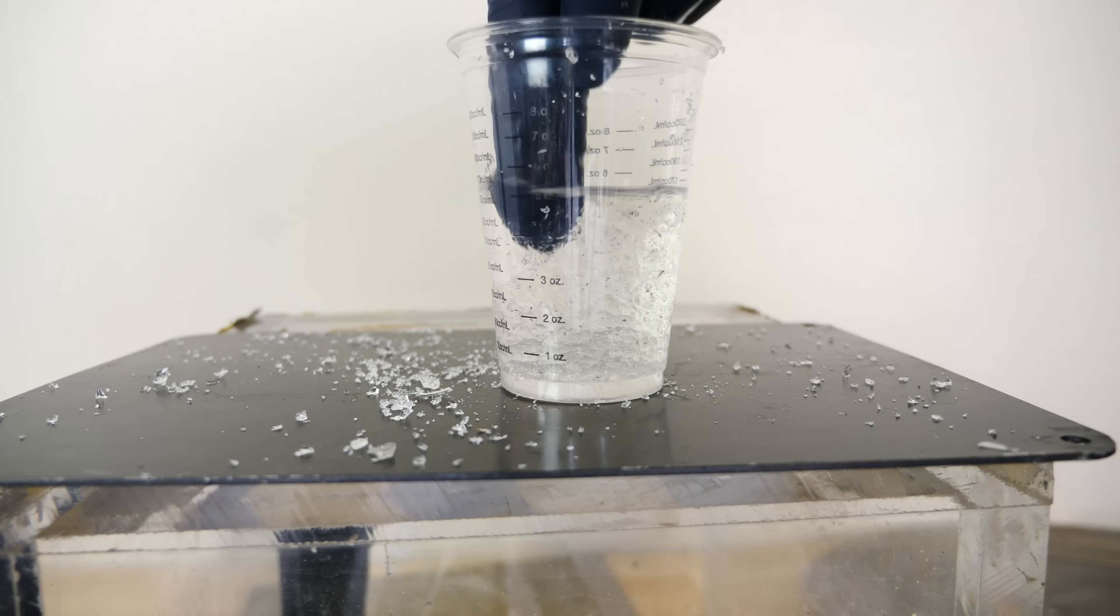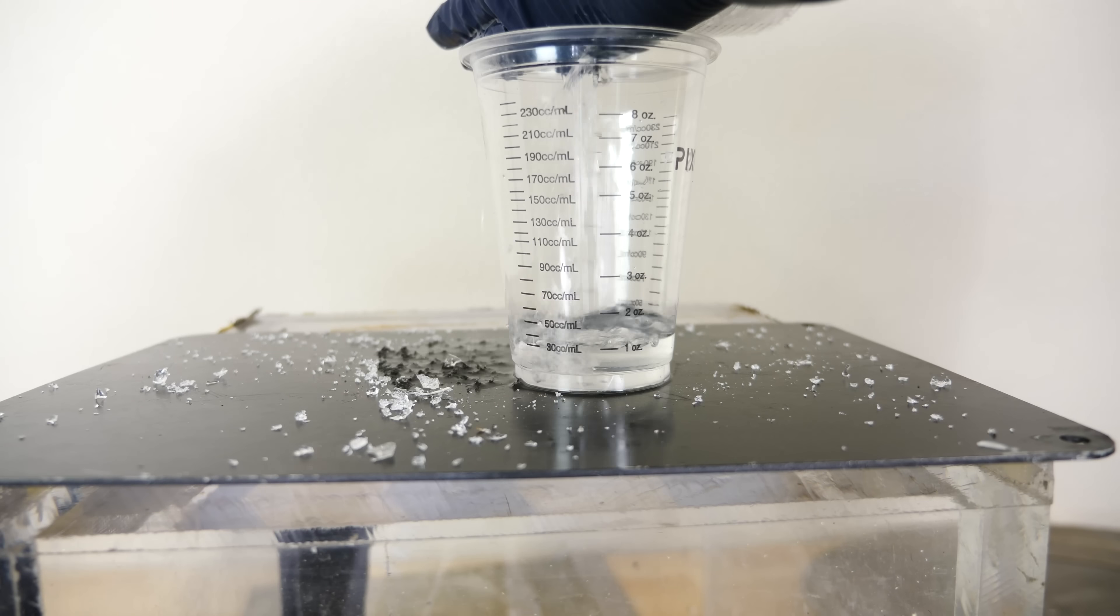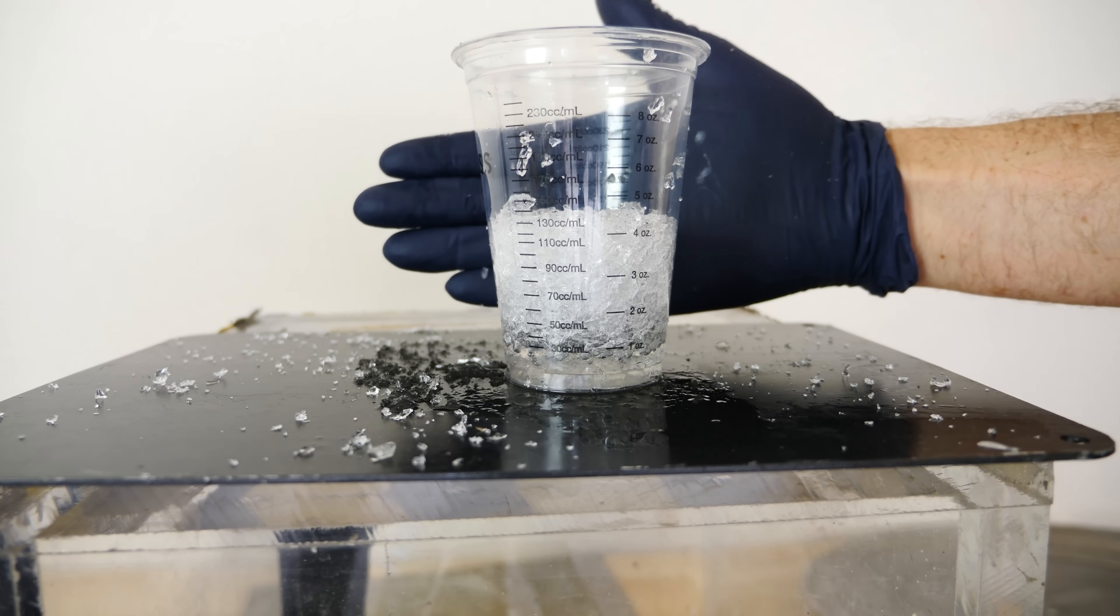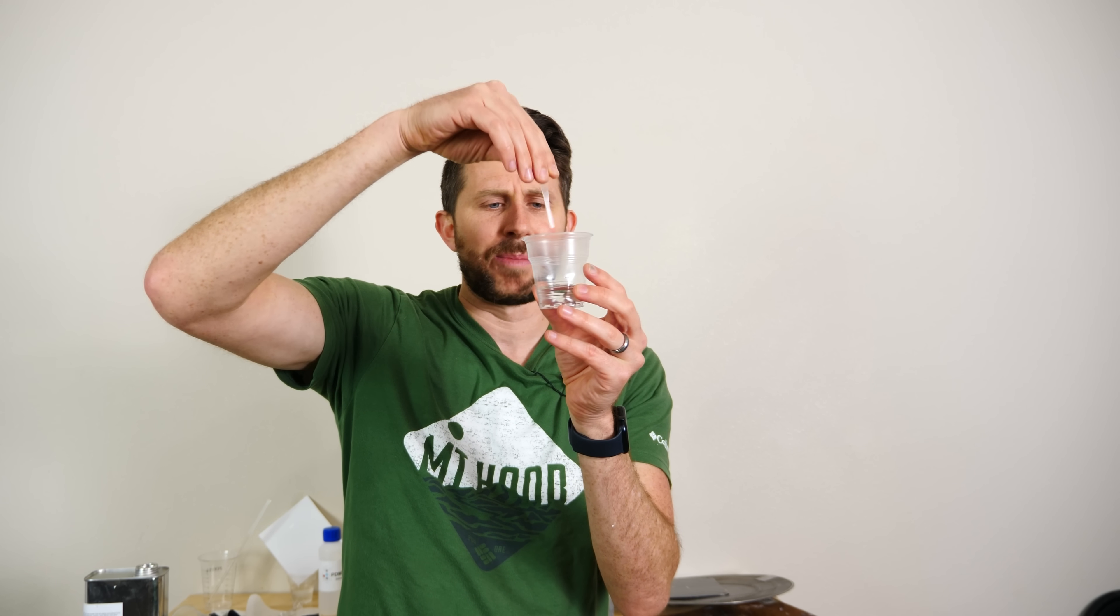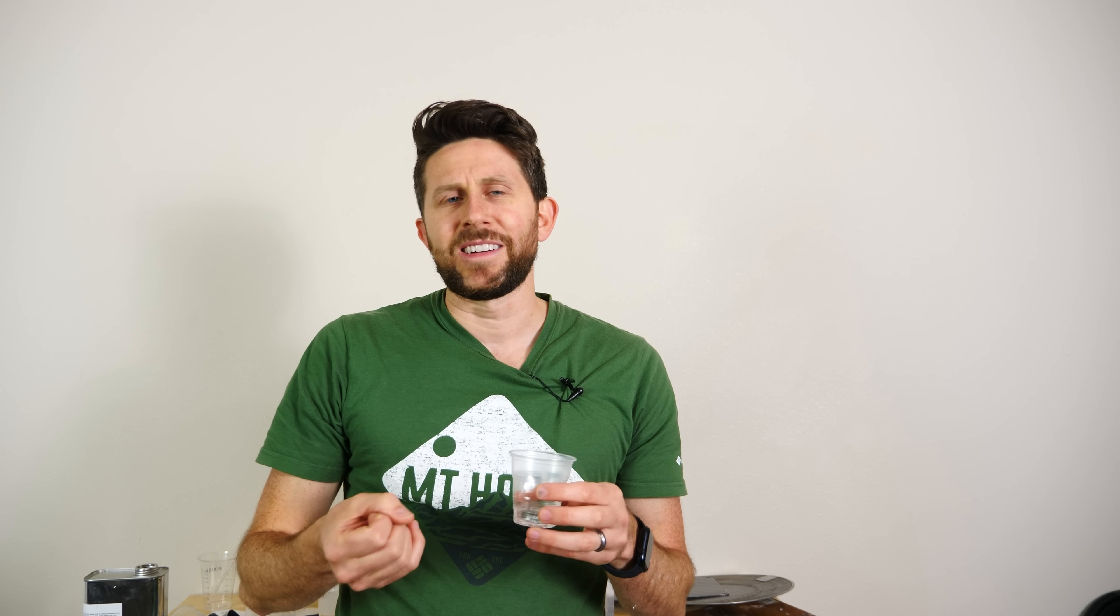This is the same thing that happens when you pour water on super absorbent polymers like Orbeez. So all you do to make the worms is take the thin strips of PDMS, drop it in the hexane, and then wait for it to absorb. It only takes a few seconds because it's a really thin strip. And then you just get it out and let the hexane start to evaporate from it.